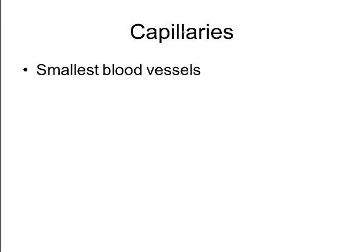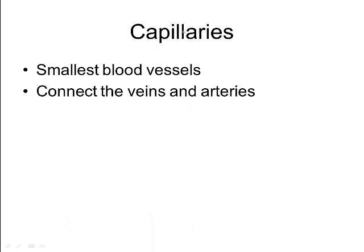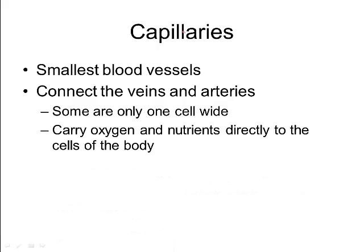The third type of blood vessel is your capillaries — the smallest of the blood vessels. One of their jobs is to connect veins and arteries together, so blood pumps through the arteries, through the capillaries, and then collects into the veins. Some capillaries are only one cell wide — super tiny. This is why you have millions of miles of blood vessels in your body. They are able to carry oxygen and nutrients directly to the cells of the body, and that stuff can diffuse right to the cells while waste products diffuse back into the blood.